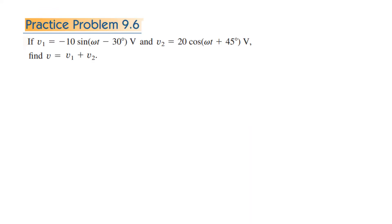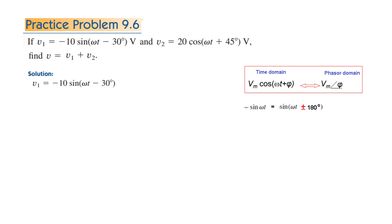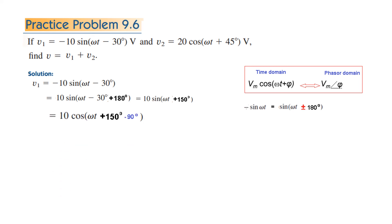The practice problem is exactly similar — we need to add two voltages V1 and V2. V1 has two issues: it is negative and it is in sine form. First, handle the negative by adding 180 degrees (common practice) to convert negative sine to positive sine. Then add minus 90 degrees to convert sine to cosine. In cosine form we can easily extract the phasor: V1 phasor is 10∠60°.